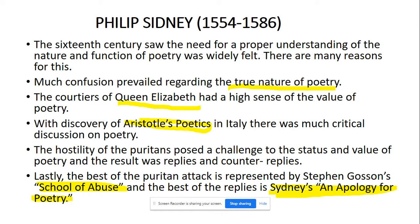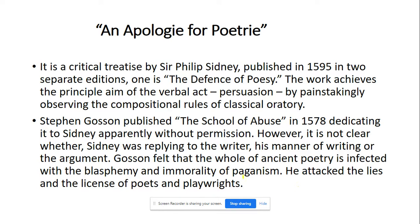These two are very important works — questions will be set on them. Stephen Gosson's 'School of Abuse' and Philip Sidney's 'An Apology for Poetry' are central texts. Now we will discuss what the 'Apology for Poetry' contains.